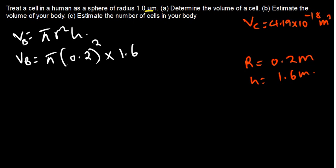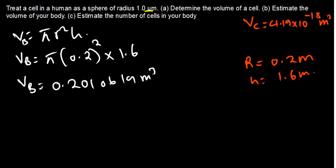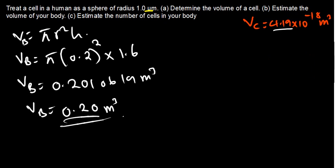So we have: Vb = π × (0.2)² × 1.6. Using the calculator: 0.2 squared times 1.6 times π gives us 0.201 cubic meters. Rounding to two significant figures, the volume of the body is 0.20 cubic meters.